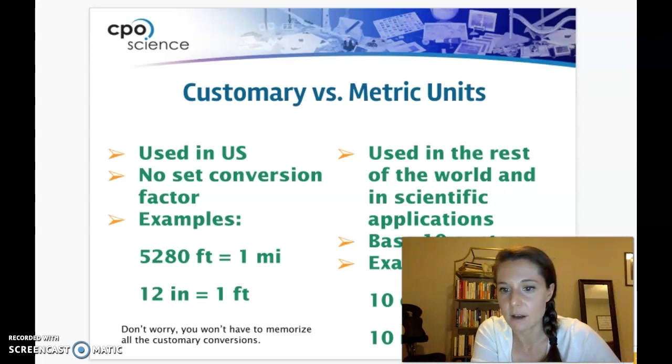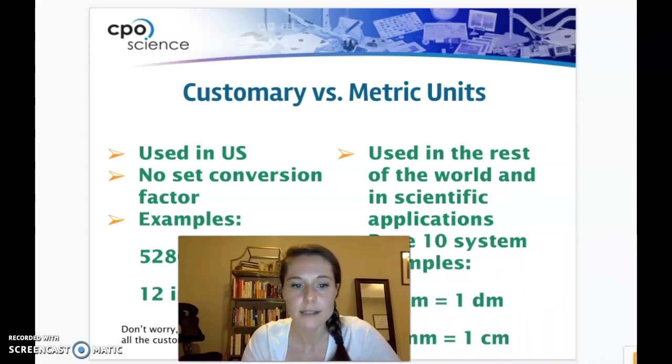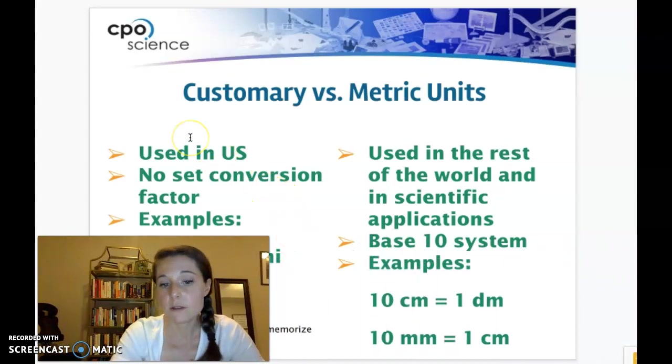Luckily for you, you do not have to memorize any of the customary units. I will always give those to you if I ask you to solve a conversion problem, but a lot of them you already know. So perhaps you remember that, for example, there are 5,280 feet in one mile or that there are 12 inches in one foot. So those are some examples of customary units.